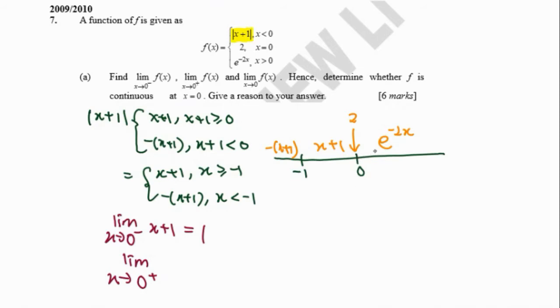Then we find the limit when x approaches 0 from the right-hand side. It involves the function e^(-2x). Substituting x = 0, it becomes e^0, which is equal to 1.